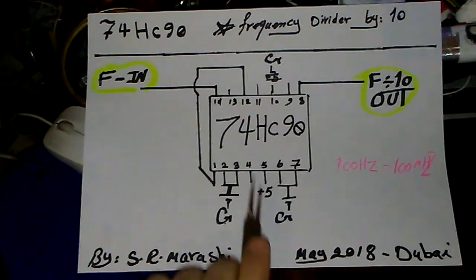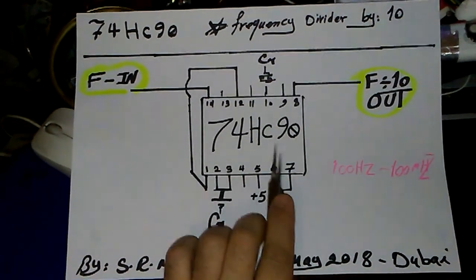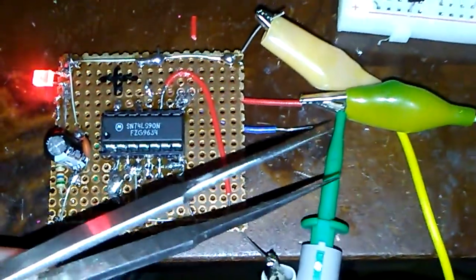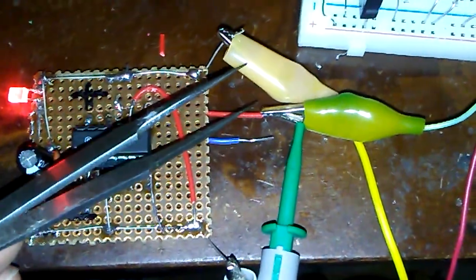Just with the 74HC90, we are able to divide frequency by 10. Now my meter lead is connected to the input.